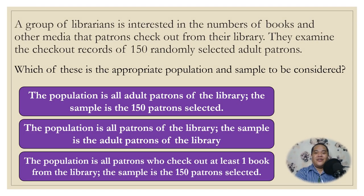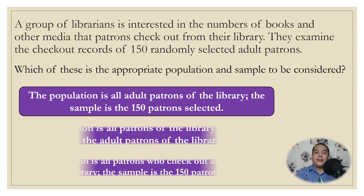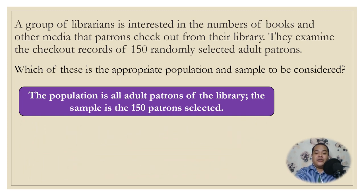How about you try answering this one. A group of librarians is interested in the number of books and other media that patrons check out from their library. They examine the checkout records of 150 randomly selected adult patrons. Which is the appropriate population and sample? You may pause the video if you want to answer. The correct answer is: the population is all adult patrons of the library; the sample is the 150 patrons selected. Did you get it right?